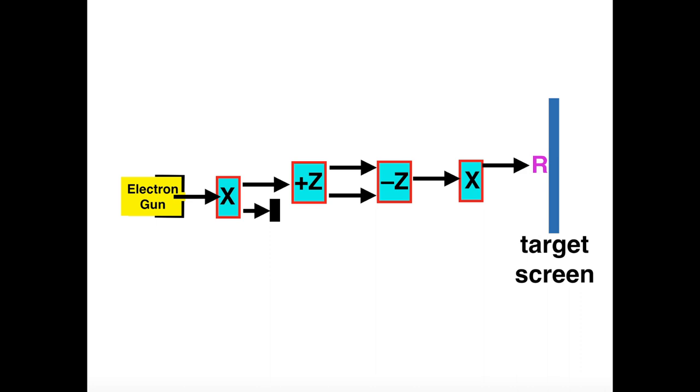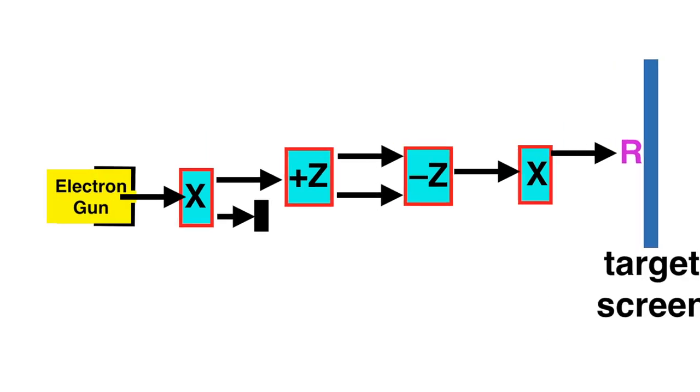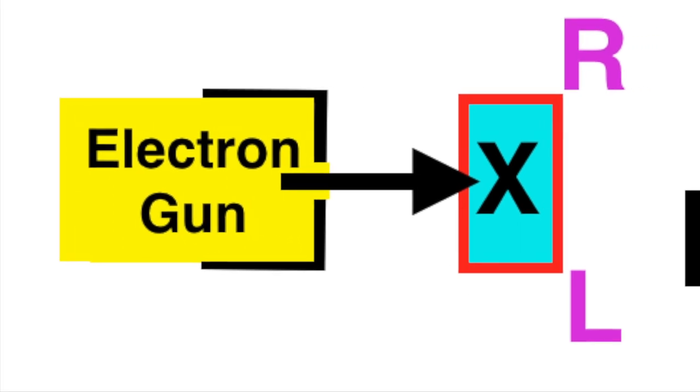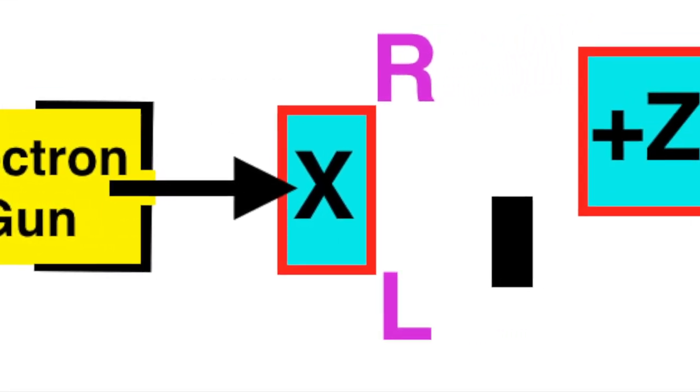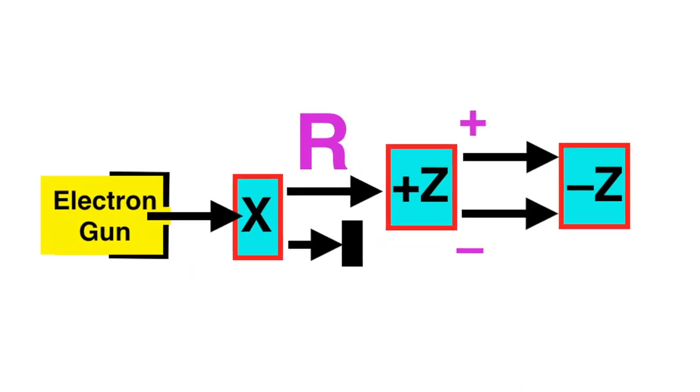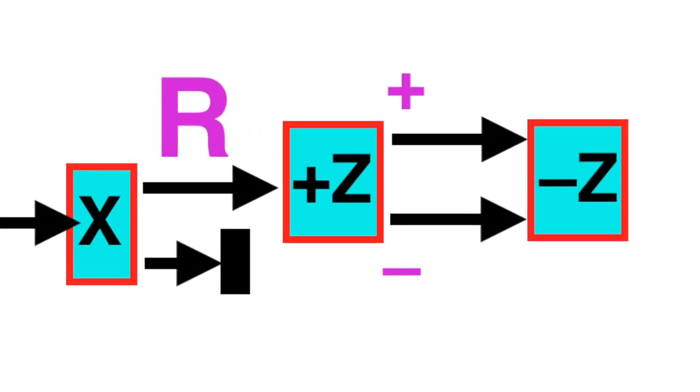A Stern-Gerlach magnet divides a stream of electrons into spin up versus spin down, or if we turn it on its side, spin to the right versus spin to the left. We line up four such magnets as you see, the blue things with the red boundary. We have an electron gun. The electron goes through the first magnet X and comes out either spinning right or left. We take all the electrons spinning left and block them, then feed the ones spinning right into that middle pair of magnets called Z-plus and Z-minus.